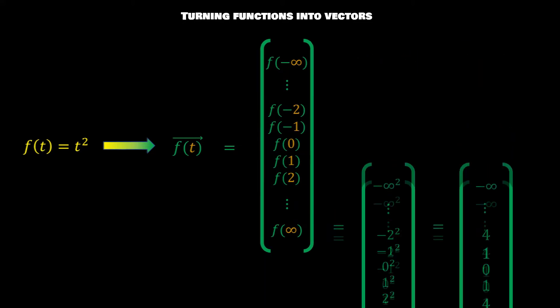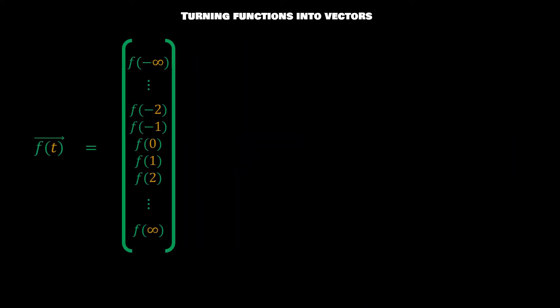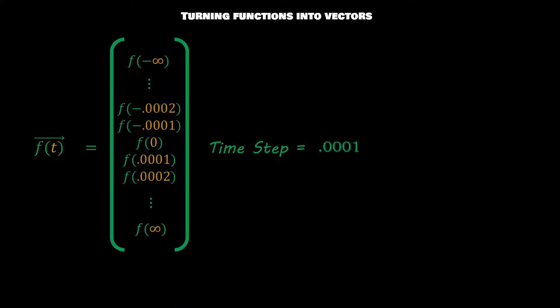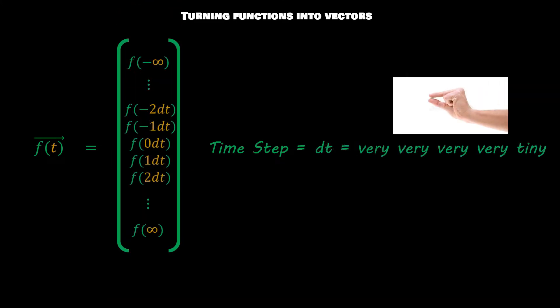But this time step of 1 doesn't have to stay at 1. It could be 0.1, it could be 0.0001, and we could keep shrinking and shrinking and shrinking this vector until we get something so unimaginably small, infinitesimally small. And this infinitesimally small number is going to be represented with dt.